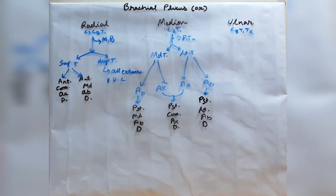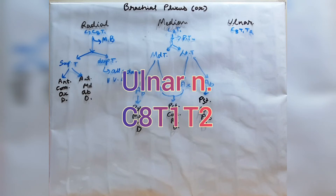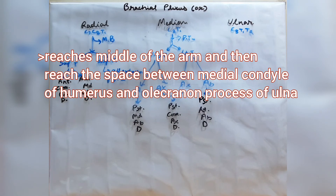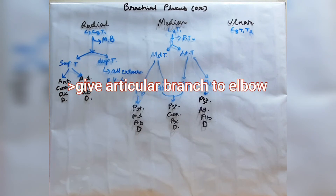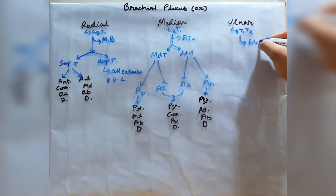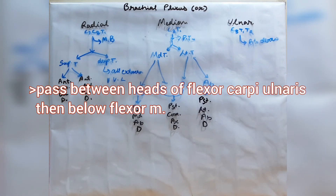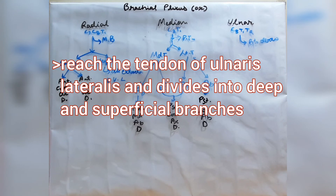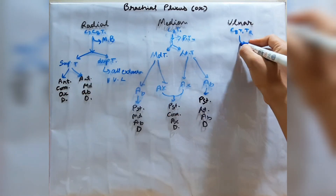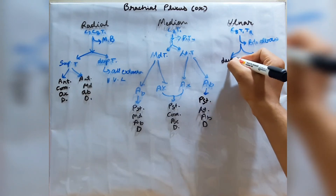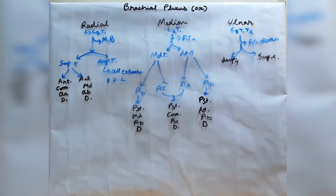The ulnar nerve is formed from C8, T1, and T2. It reaches the middle of the arm and passes to the space between the medial condyle of the humerus and the olecranon process of the ulna, where it gives off a branch to the elbow joint. It then passes between the heads of flexor carpi ulnaris, goes below the flexor muscles, reaches the tendon of ulnaris lateralis, and at that level divides into a superficial trunk and a deep trunk.